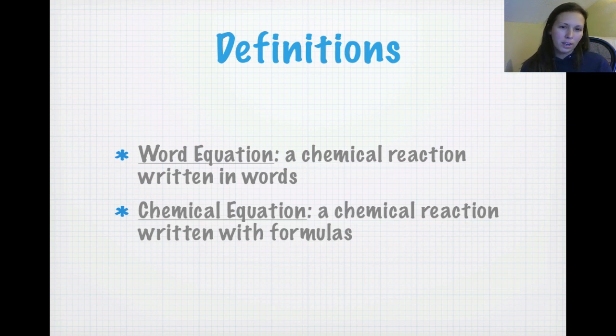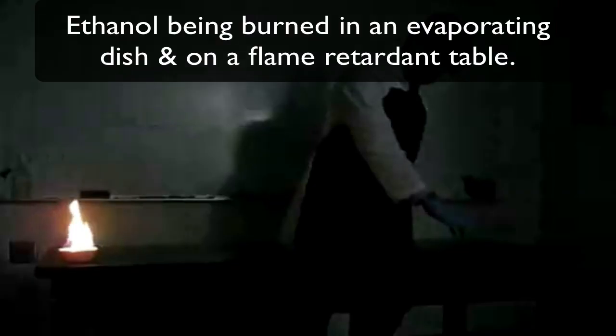So, then what you also need to know is that a chemical equation is a chemical reaction written with formulas. So, where I would say C2H5OH reacts with O2 to yield blah blah blah. I'm not going to give you guys any examples now. You'll see them shortly.